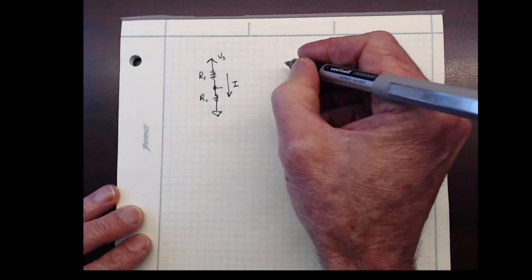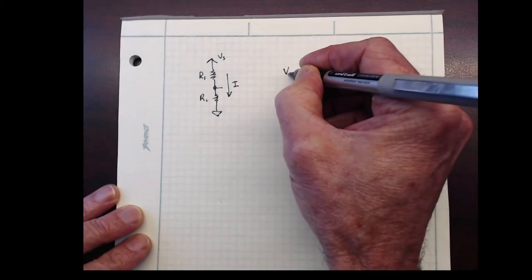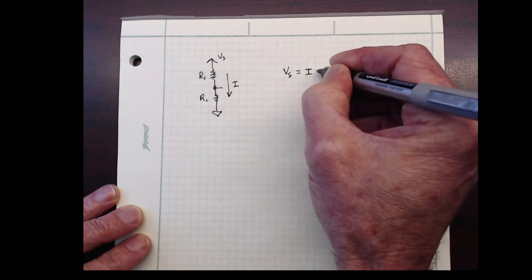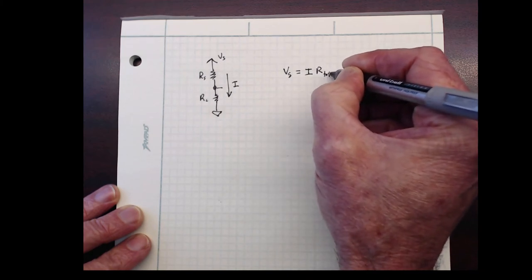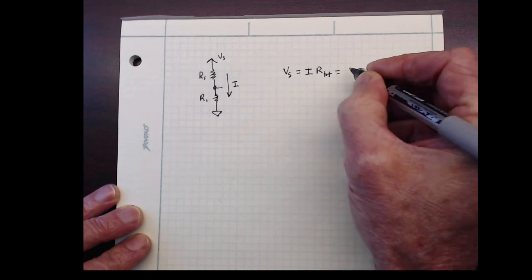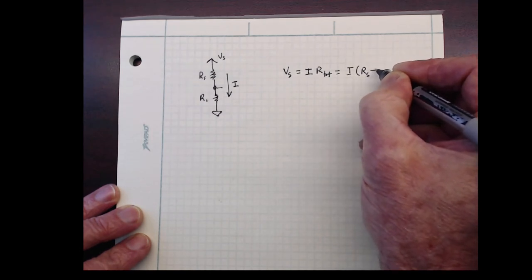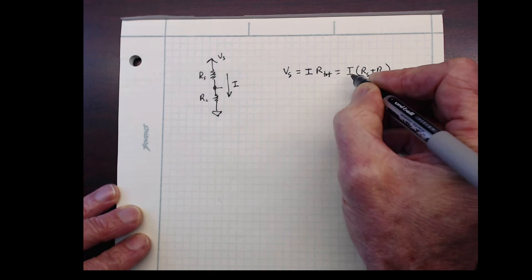So what is the current here? So apply Ohm's law. V sub S is I times the total resistance. And the total resistance is just the sum of these two resistors, R sub S plus R sub C.